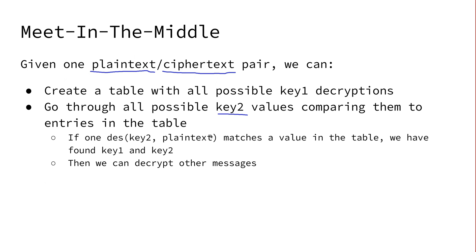If we have found this match, then we have found the actual key1 and key2, because these are the only possibilities for having this plaintext encrypted twice into that ciphertext. Therefore we have found both keys and can decrypt other messages or re-encrypt different messages.